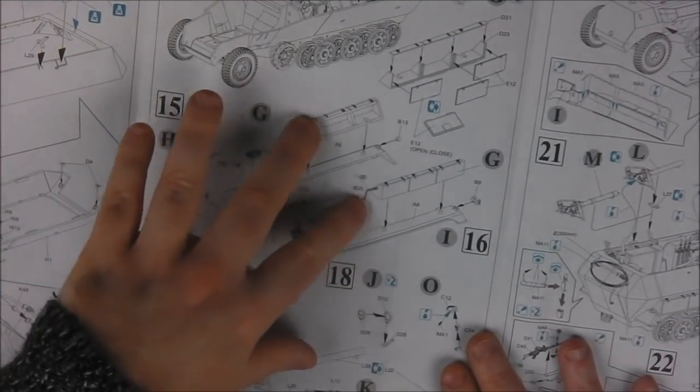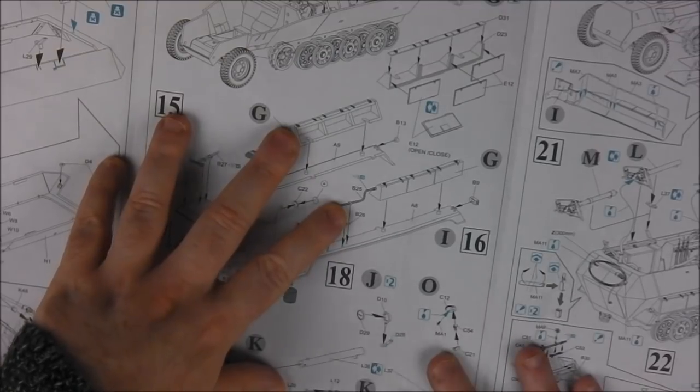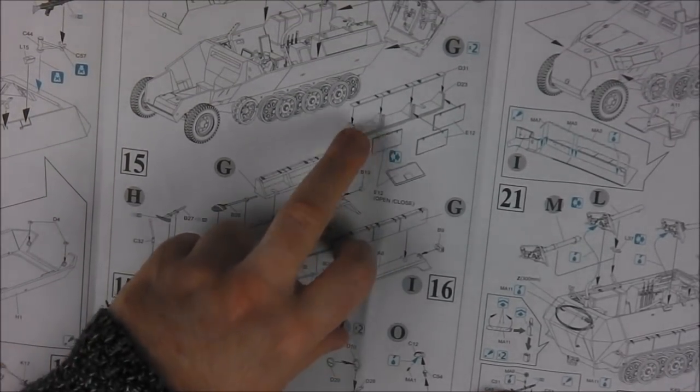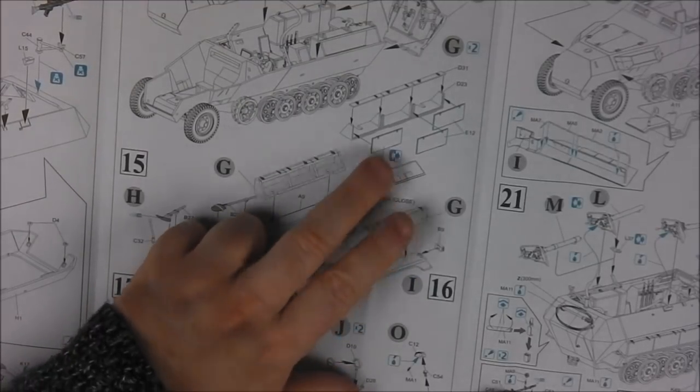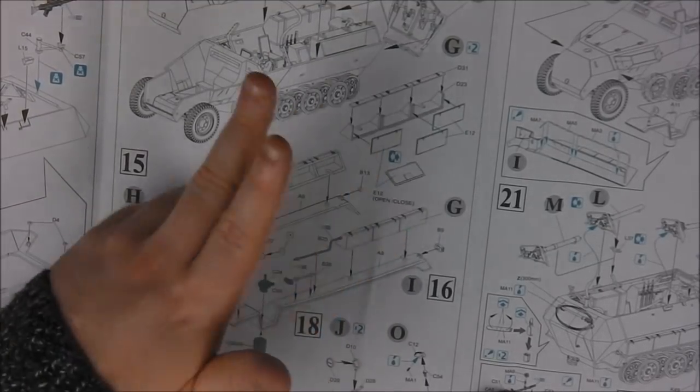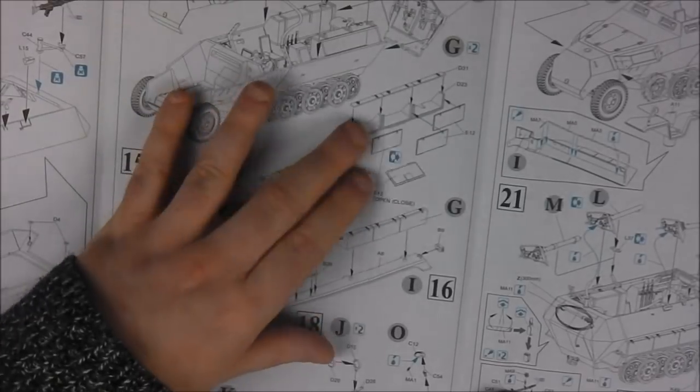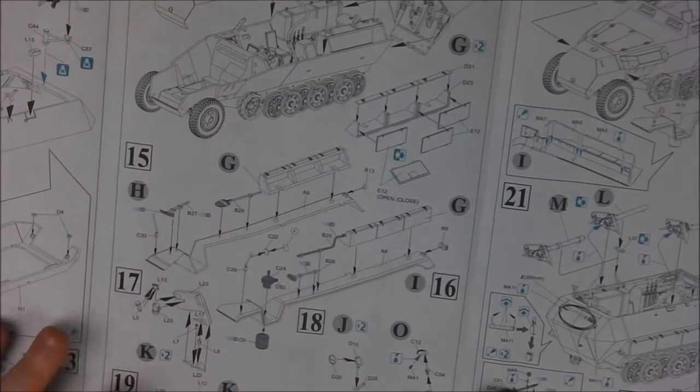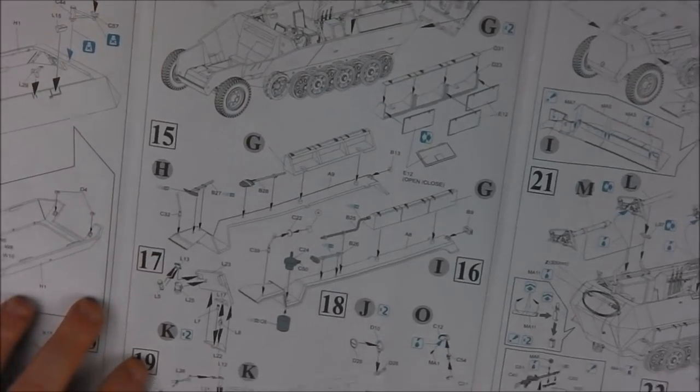Step 15, we're moving on to the fenders and stowage units here, these little lockers. And these can be modeled open or shut, that's kind of cool so I might actually model one of these open. Maybe in their haste the crewman has them secure one of them and it's flopped open in the heat of battle. Gives you a bit of options.